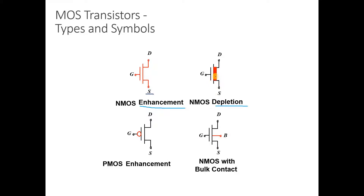For the depletion type, the channel is already created and a different symbol is used. For NMOS, the gate is attached with a bubble symbol. The four-terminal NMOS symbol includes drain, gate, source, and body or bulk. This is the symbol we will be using more often in our discussions.